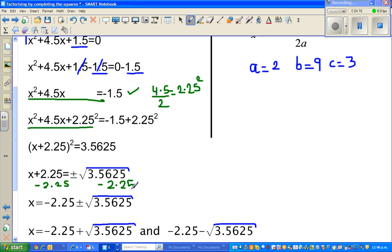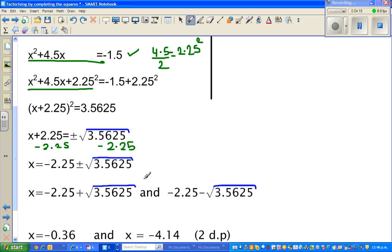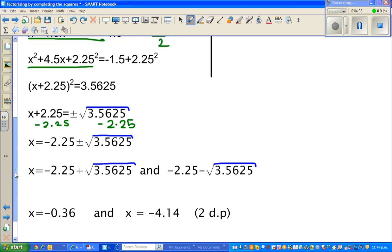This gives me x = -2.25 ± √3.5625. This means -2.25 plus this number and -2.25 minus this number.